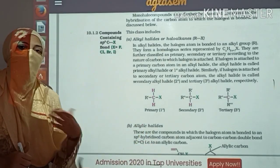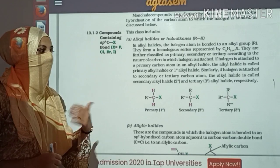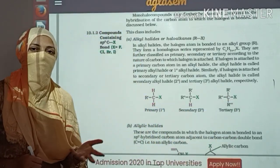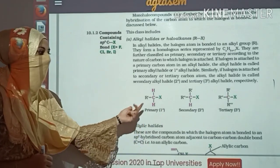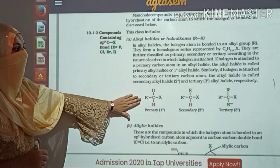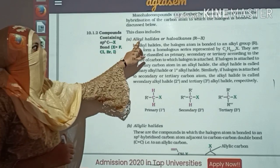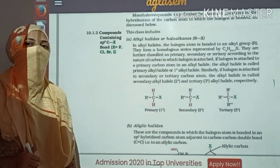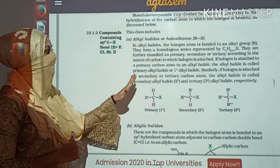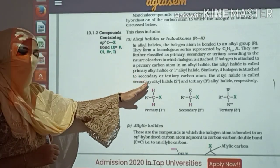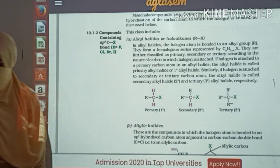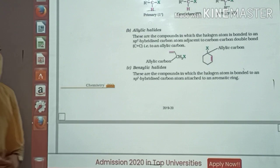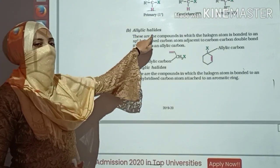Quaternary is not possible because our fourth hand is occupied by X. For quaternary, all four hands would need R groups attached — which is not possible here. That is the reason we have only primary, secondary, and tertiary. This first type is called alkyl halides, with simple formula RX.